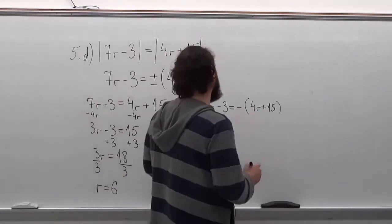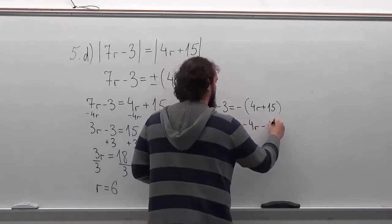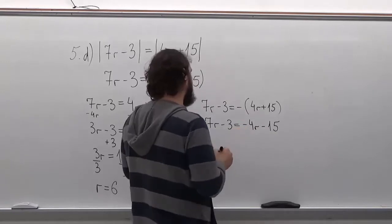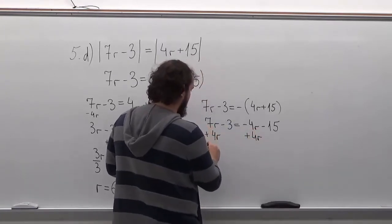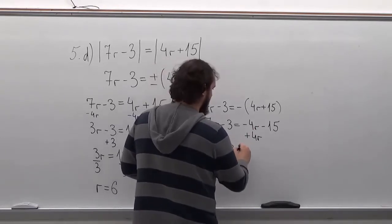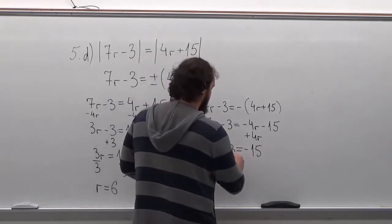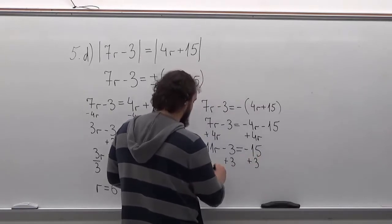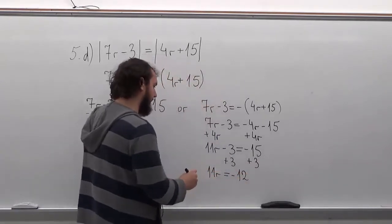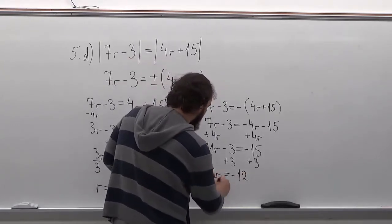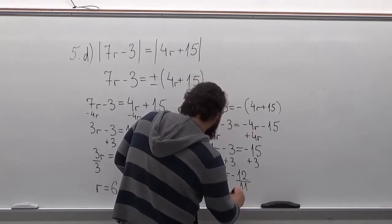For this side, we want to open the parenthesis first. So first thing we'll do is add 4R to each side. We'll have 11R equals minus 15. Now we will add 3 to each side, and then we will divide both sides by 11. So our answer will be minus 12 over 11.